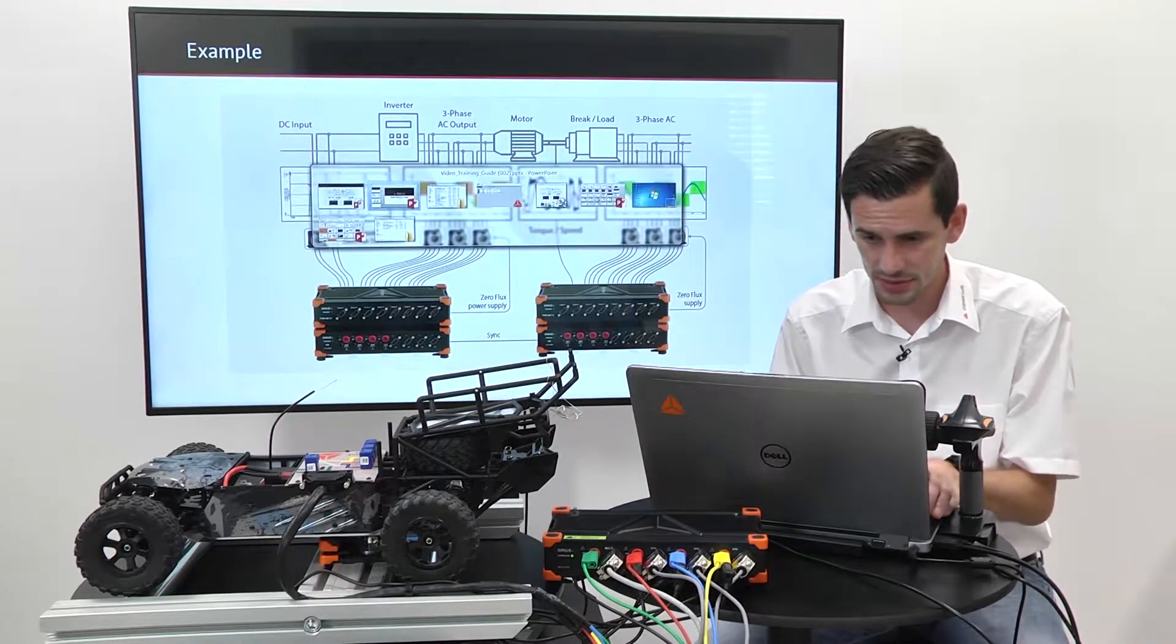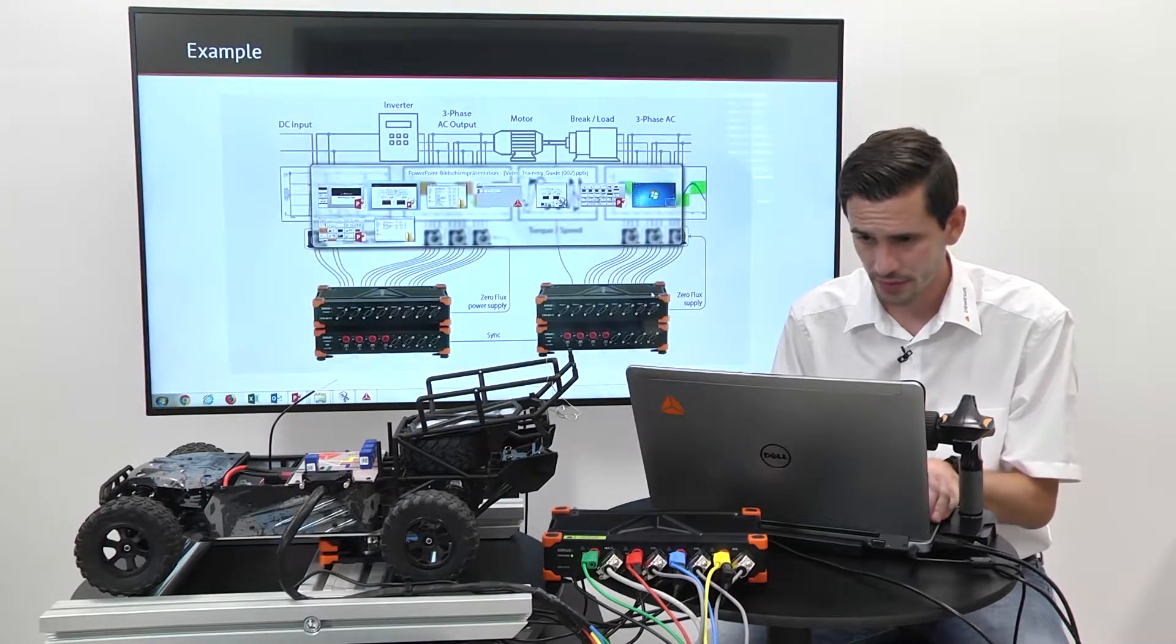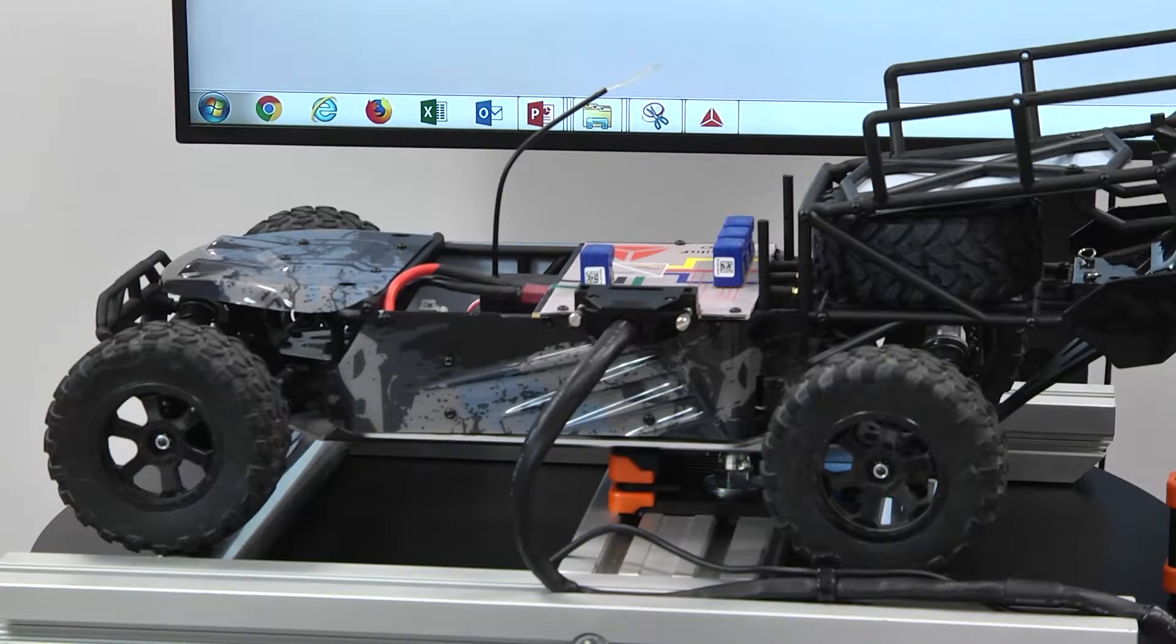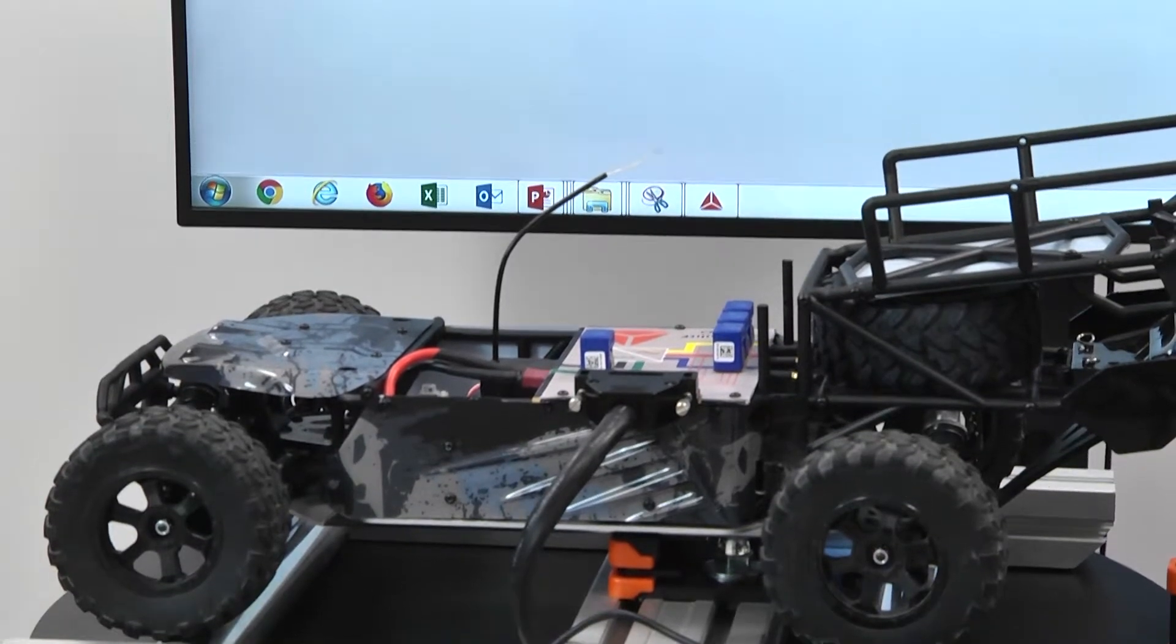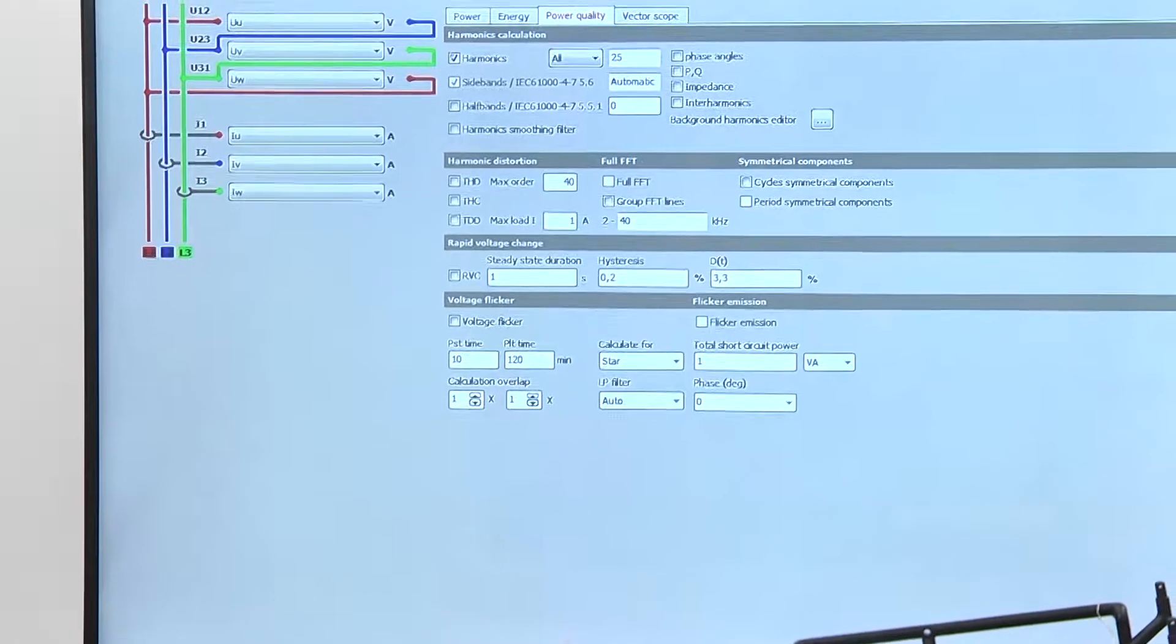Okay, let's switch to the software. After configuration of the analog input setups, we defined our channels for DC voltage and DC current, as well as for AC voltage and current. We switch to our power module.